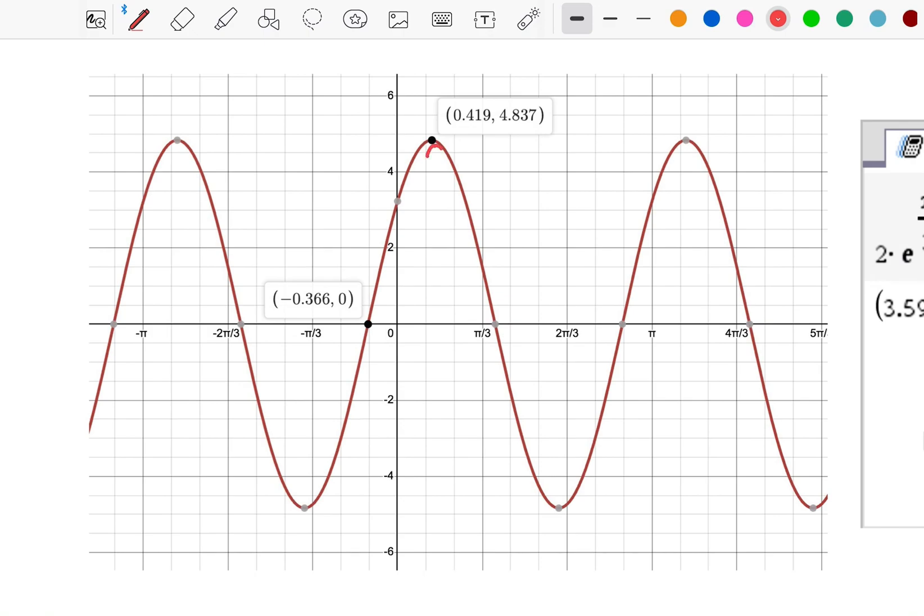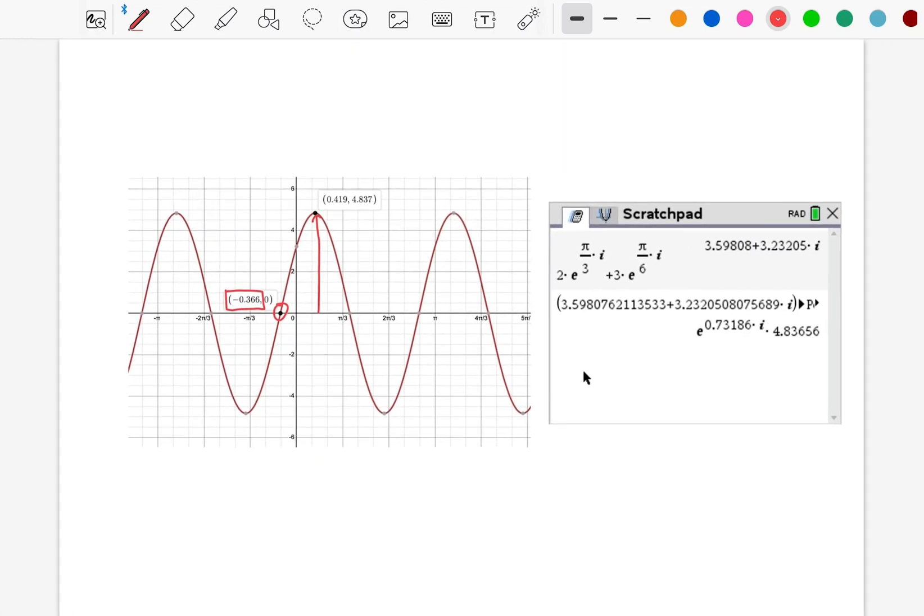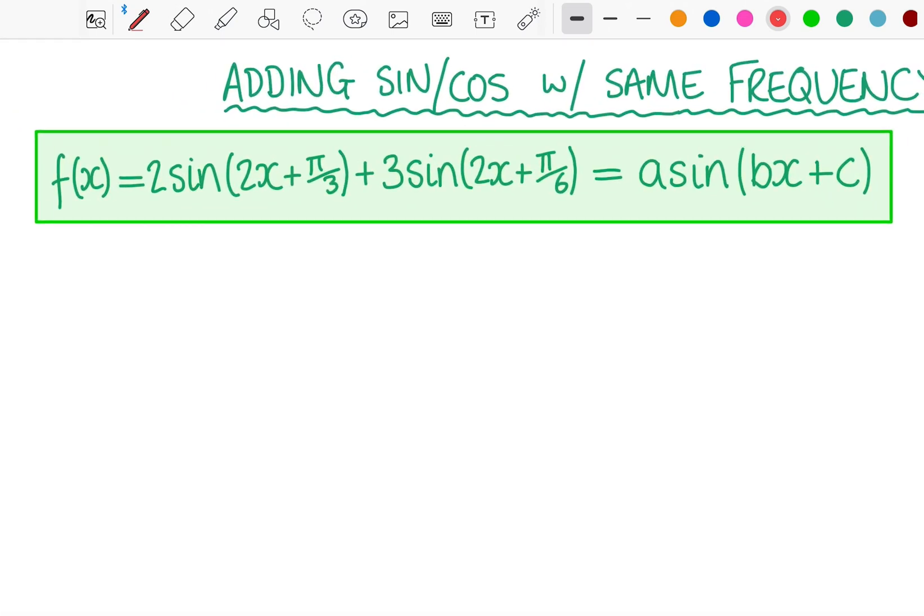We can see what the amplitude is going to be, and that gives us some clue about the phase shift of the final function. But it may not always be possible to graph it, and even if you can graph it, figuring out what c needs to be from there is still not that easy. So let's look at this other method.